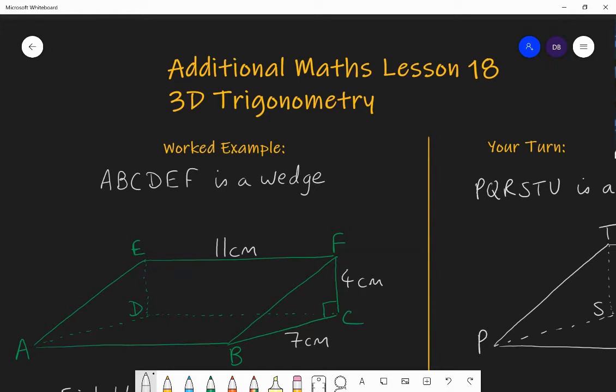Hello and welcome to lesson 18 of Additional Maths with Mr Barrow. Today we're going to be looking at 3D trigonometry, so problems that involve the skills we have learned in trigonometry, involving things like SOHCAHTOA, the sine rule, the cosine rule, going from right angle triangles to beyond in three-dimensional problems.